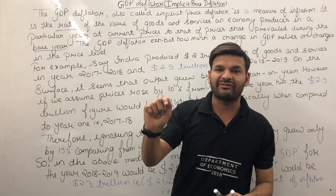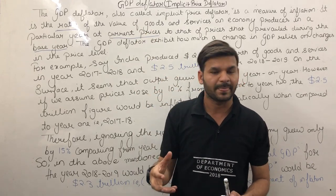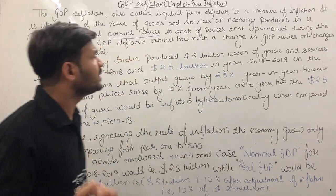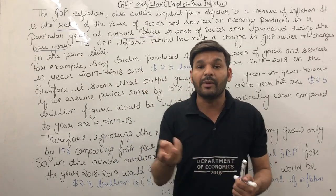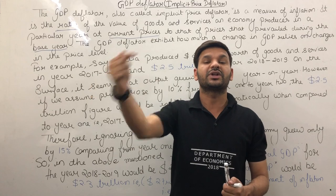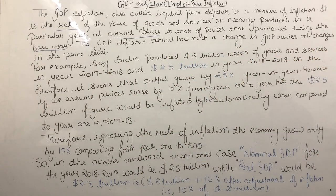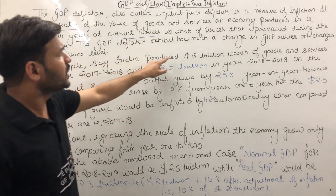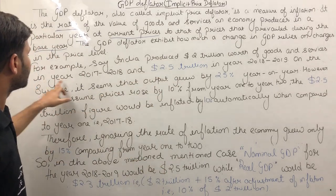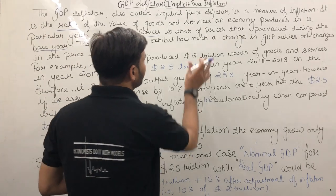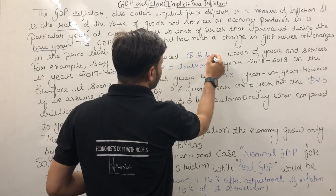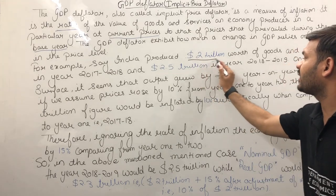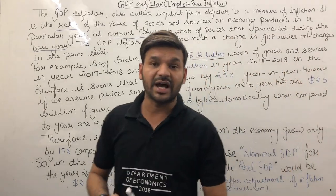So GDP Deflator is nominal GDP divided by real GDP. It shows how much change in GDP relies on changes in the price level — that is, how much of GDP growth is due to price changes versus actual output growth.